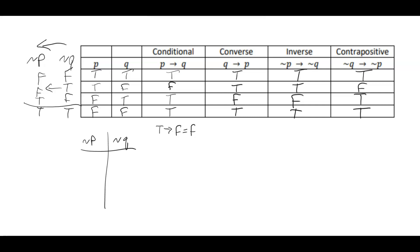Now, what's important to see here is the pattern involved with the conditional is the exact same pattern involved with the contrapositive. So if you're trying to show that P implies Q, you can show instead that not Q implies not P.